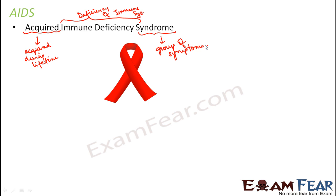AIDS was first reported in 1981 and has killed millions since. No proper cure has been found yet, though research is ongoing. Some partial treatment is available which only increases the lifetime of the patient. The medicines can help increase the longevity of the patient, but cannot fully cure the disease.